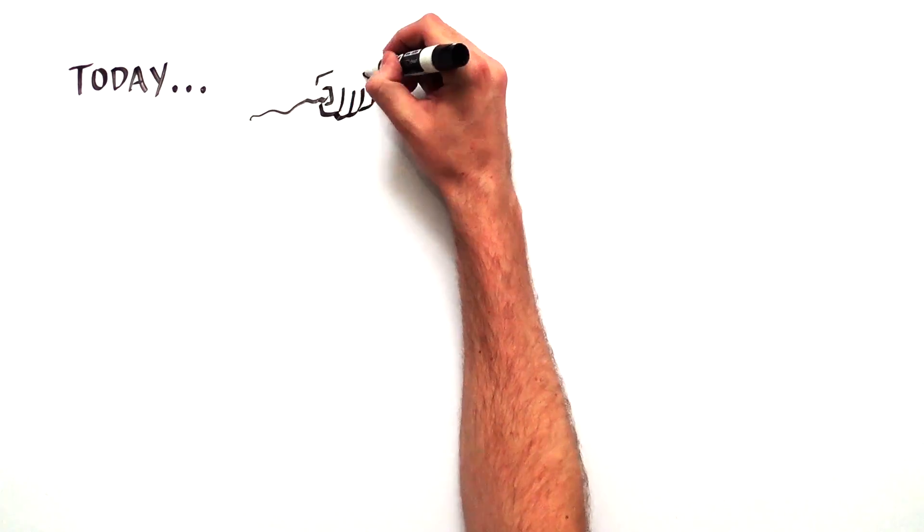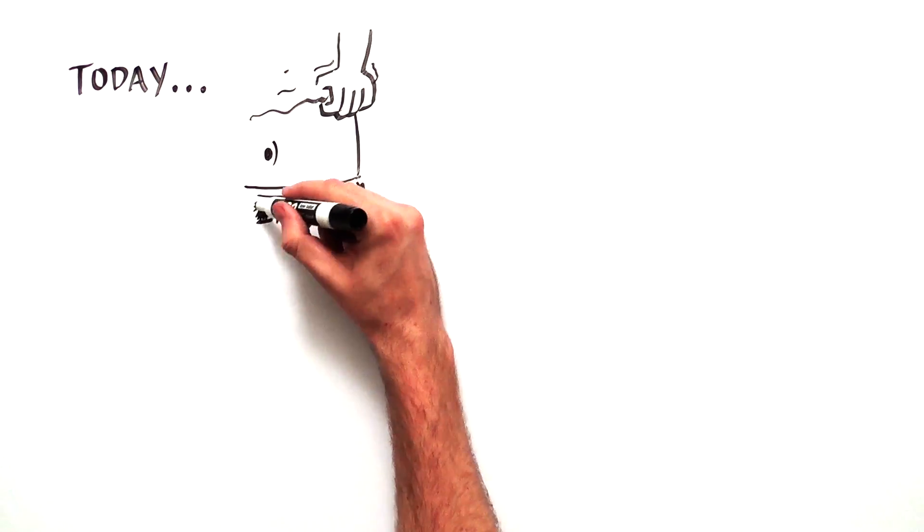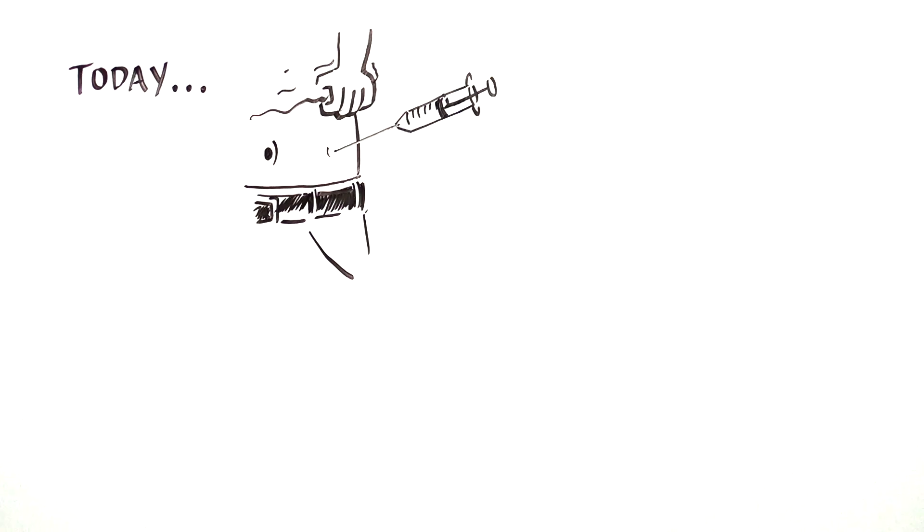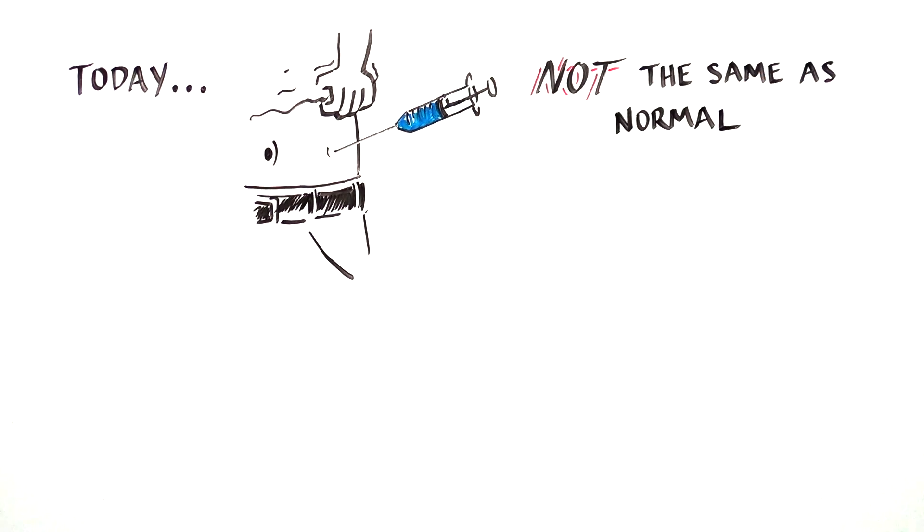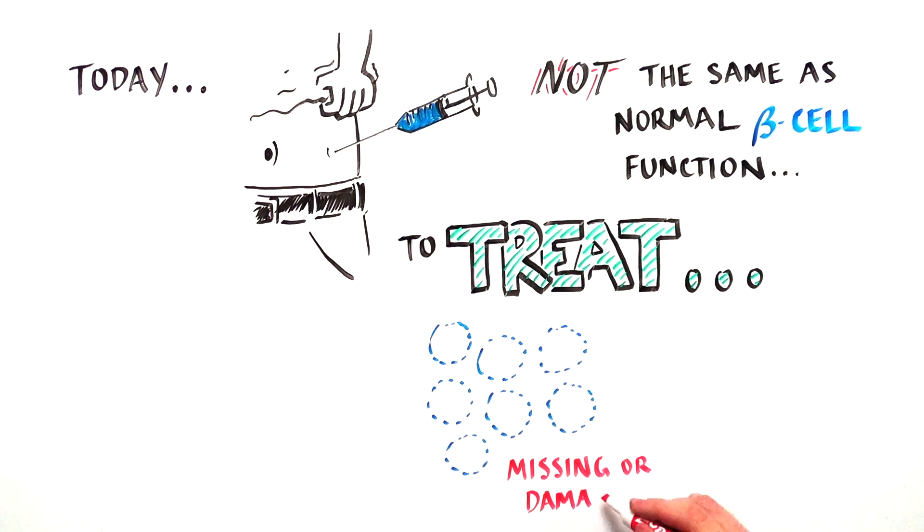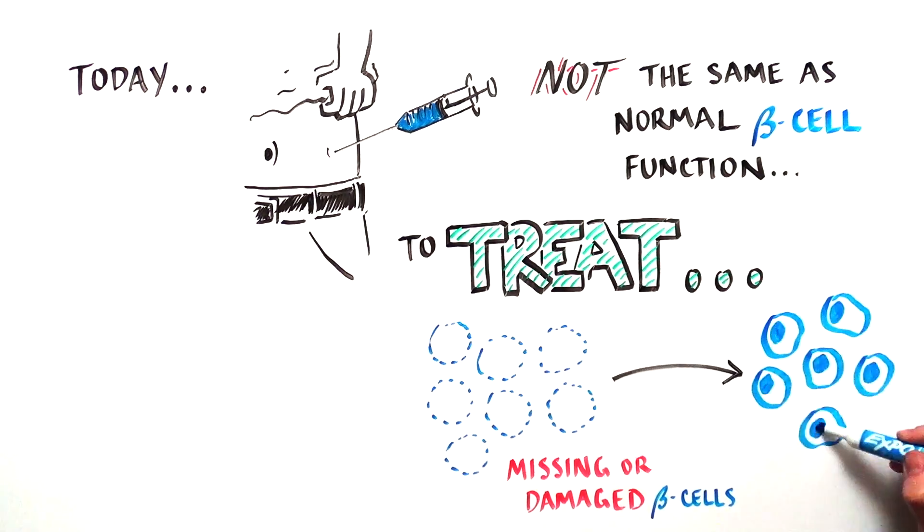At present, diabetics inject insulin with a syringe or pump, but providing insulin by that means is nowhere near as exact and effective as having functional beta cells. To treat diabetes, scientists are trying to replace the missing or dysfunctional beta cells.